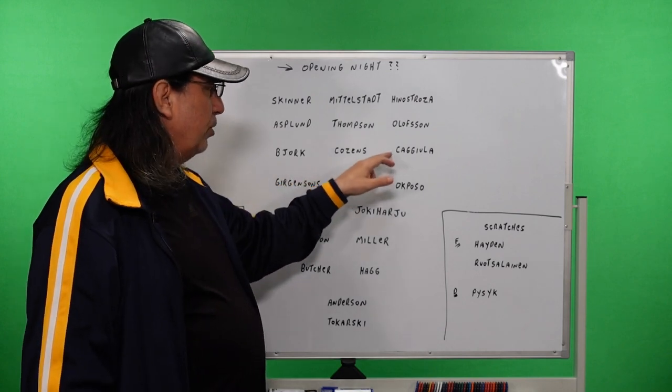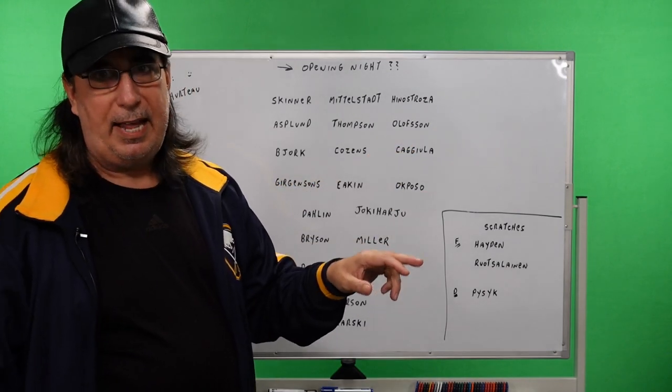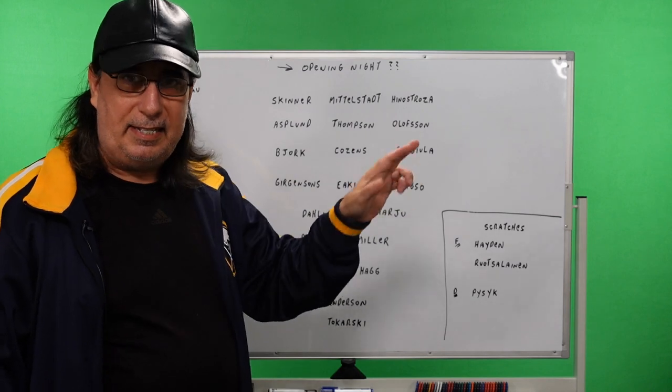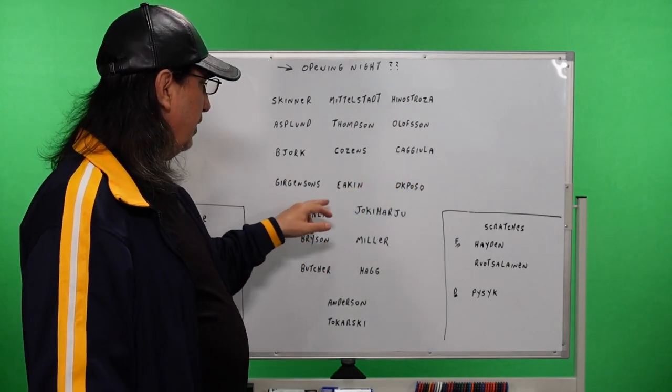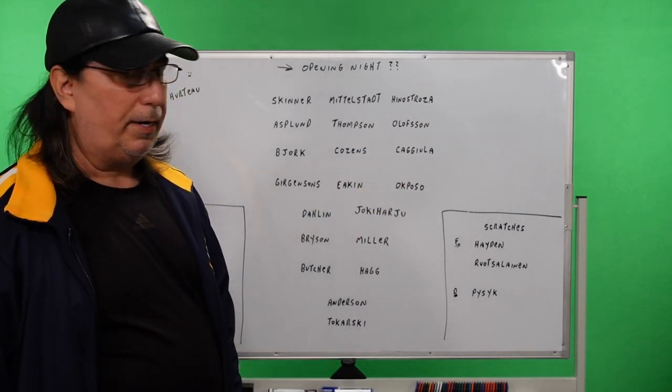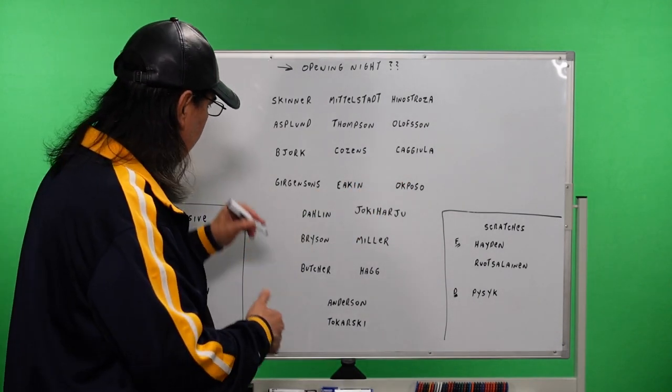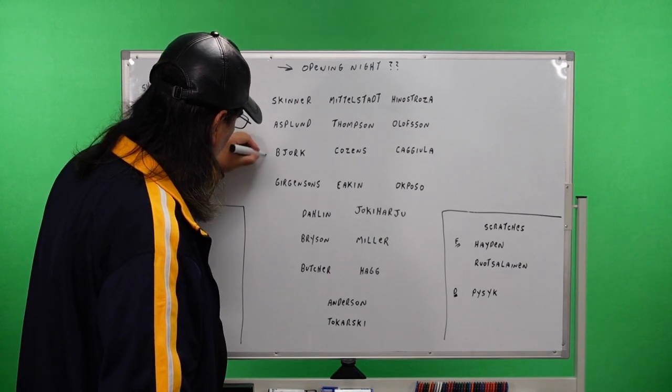But he impressed me more than Olofsson in camp. And these guys got some chemistry together. So let's leave it. The third line, I got Bjork, Cozens, and Caggiula. And CapFriendly had them as the fourth line, but they did have them together. And our veteran line, Girgensons, Eakin, and Okposo I got as our fourth line. Now, I'm not saying that these lines can't flip.